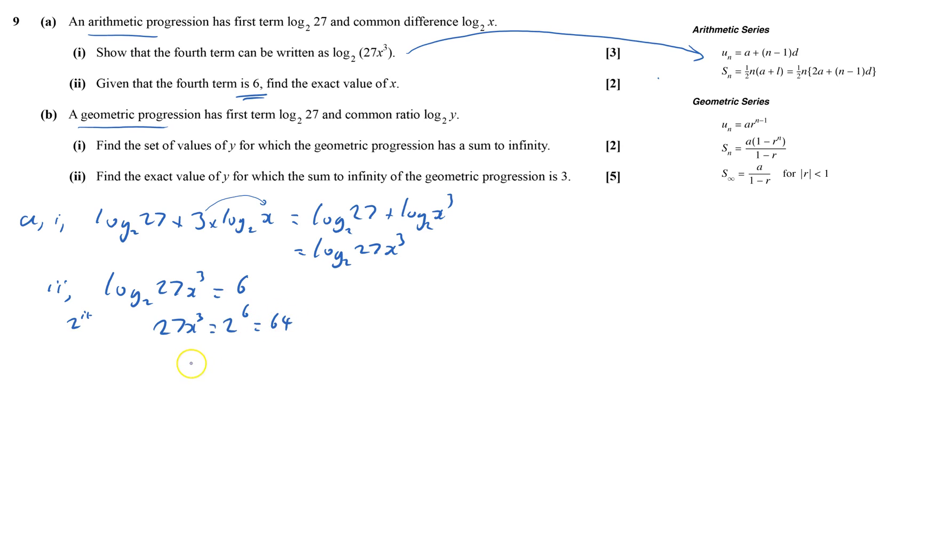So x cubed equals 64 over 27, so x equals cube root of that. Cube root of 64 is 4, cube root of 27 is 3.